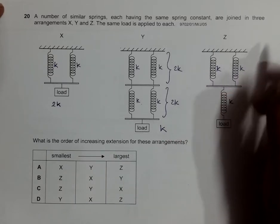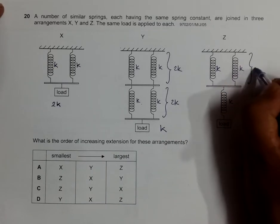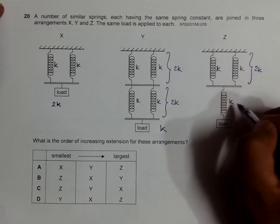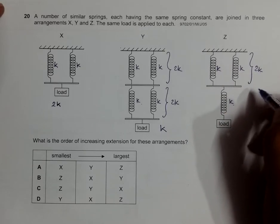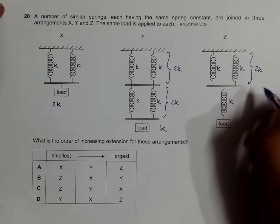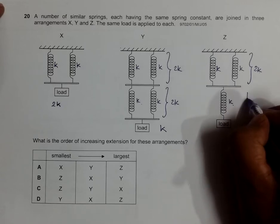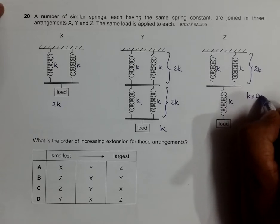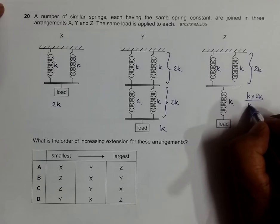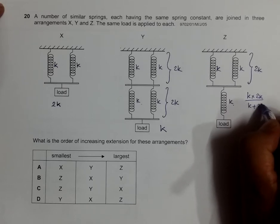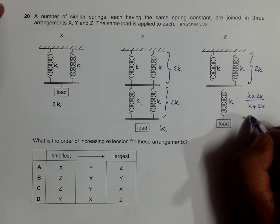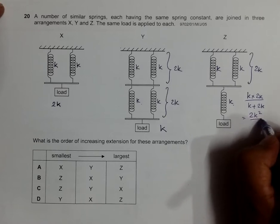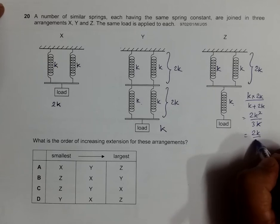Now here, K and K are in parallel, so this is 2K. But this 2K and K is in series, so the value of this new spring constant will be equal to K times 2K divided by K plus 2K, and that's equal to 2K squared by 3K. K and K cancel, so it's equal to 2K by 3.